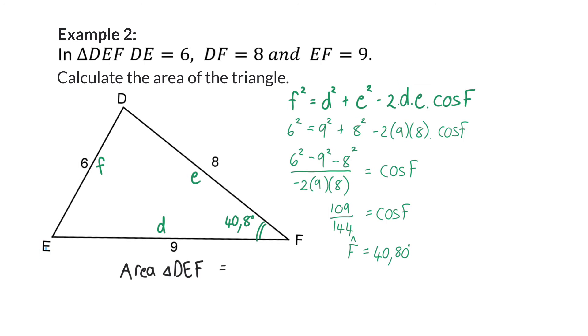Now that we have angle F we can determine the area using our two sides as well as the included angle. So the area rule can be rewritten as a half multiplied by D multiplied by E and sin of F. Now we can substitute the information, so we'll have a half multiplied with 9 multiplied by 8 and then sin of 40.8 degrees. Therefore the area of this triangle will be 23.52 units squared.